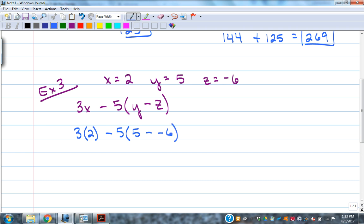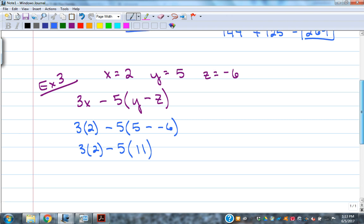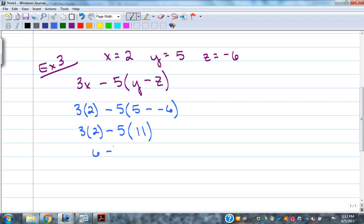Then work that out. We think order of operations here - parentheses happens first, so that's going to be 5 minus negative 6, which should be 11. Then next order of operation would be multiplication - there are no exponents involved, so it'd be 6 minus 55, which would be negative 49 as a result.